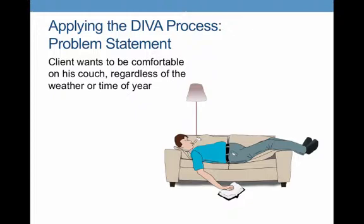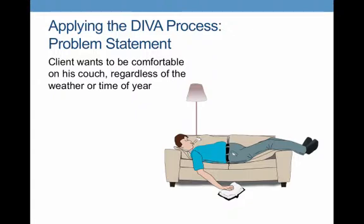Within this problem statement, what we had was a client who wants to be comfortable year round. A fine goal, but this is an infrared image of his house. In the language of the building community, his building envelope is very lossy — he's losing a great deal of energy through his walls and windows. So how do we help him?